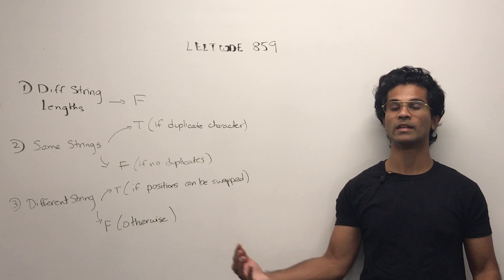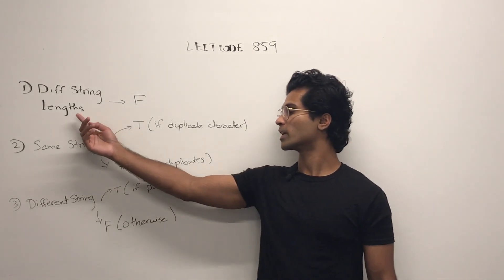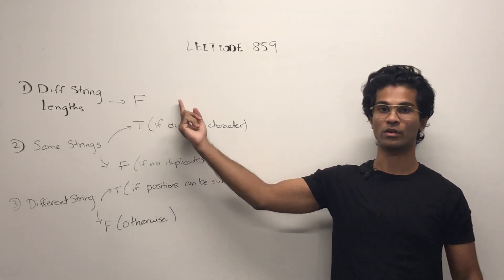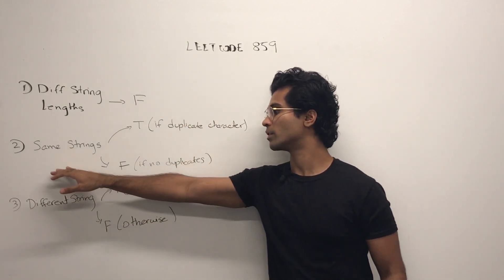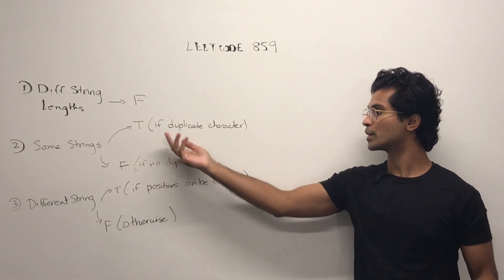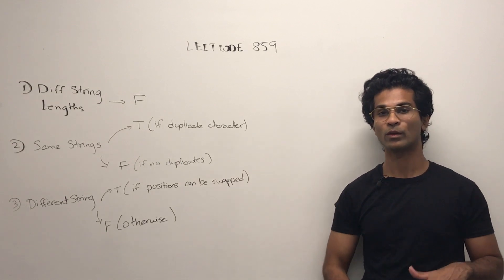Here's a flow chart which would make the code easy to understand. First we check if they're different lengths we're always going to return false. Otherwise if they're the same string we're going to check for duplicate characters and we'll use a hash map for that.